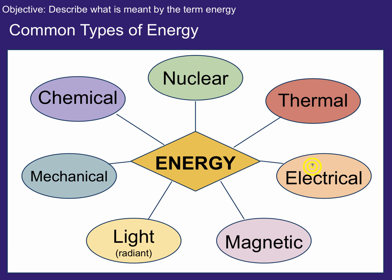Thermal energy we'll go more in depth with later. Electrical energy deals with electricity and electrical charges. Related to that is magnetic energy — oftentimes these are combined and called electromagnetic energy. Light can be thought of as a separate type of energy. In physics we mean more than just visible light — there are types of light we can't see, like infrared and x-rays. Technically light is a form of electromagnetic energy, but it's listed separately here so you can think of it a bit distinctly.